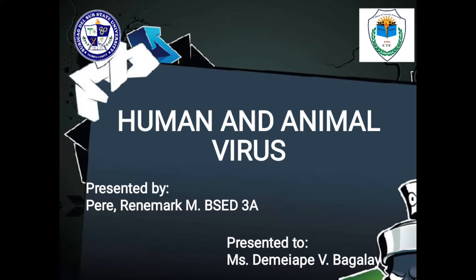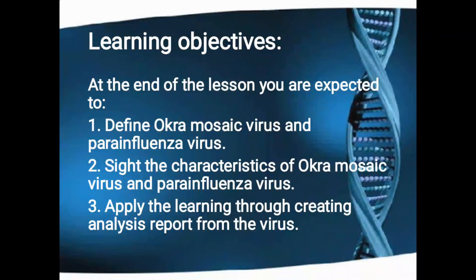In today's lesson, we will discuss two viruses that hinder life from prospering in both the plant and human kingdoms. At the end of the lesson, you are expected to define okra mosaic virus and para-influenza virus, cite their characteristics, and apply the learning by creating an analysis report from the virus.